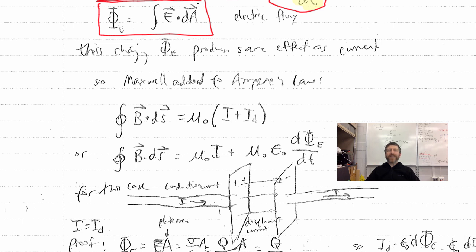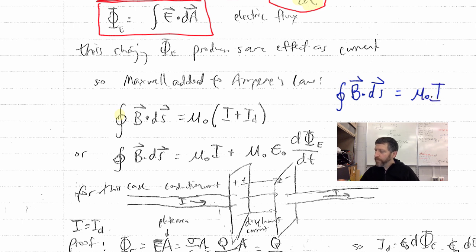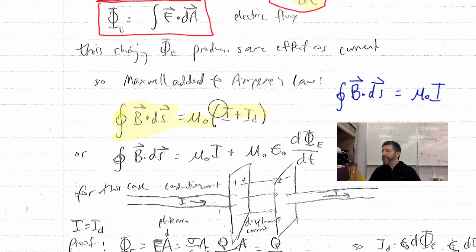So Maxwell added to Ampere's Law. Ampere's Law, as you recall, is the integral about a closed loop of B dot dS equals mu naught I. Maxwell said we've also got to include the displacement current. So the updated form is: the integral of B dot dS equals mu naught times I plus the displacement current. Very often we'll have just conduction current or just displacement current, but we could have both — and both cause magnetic fields.